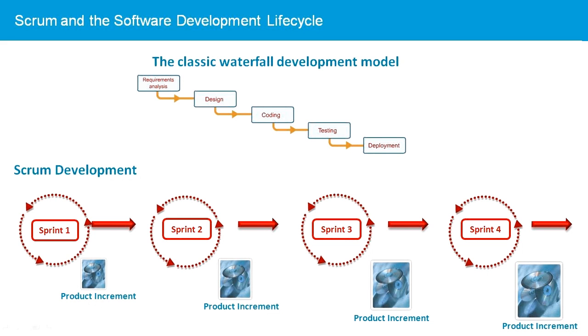At the end of each sprint, a team retrospective is held on what went right and wrong with the last sprint, to ensure continual process improvement.